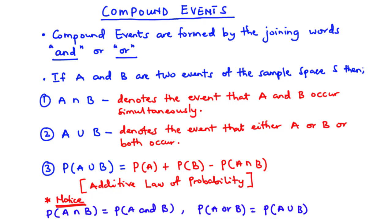Now in the previous lessons, we established the fact that events are subsets of a sample space. Therefore, two or more events can be combined to form a new event, and we call this new event the compound event. Compound events are formed by the adjoining words AND or OR. And the sample space in this case is called the universal set.